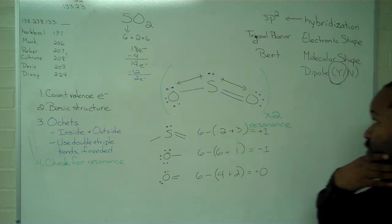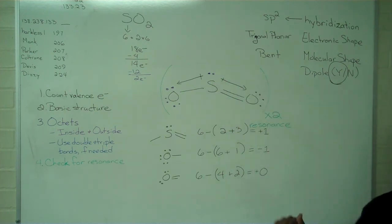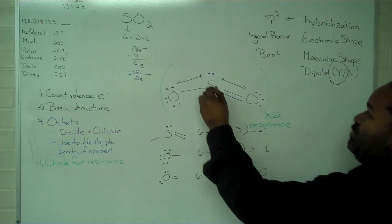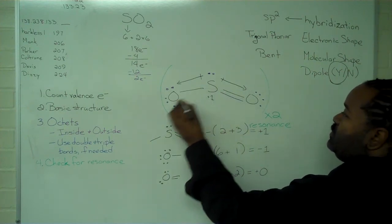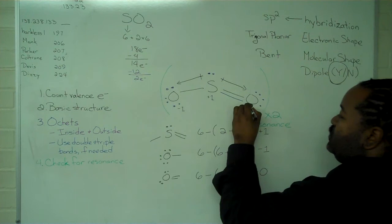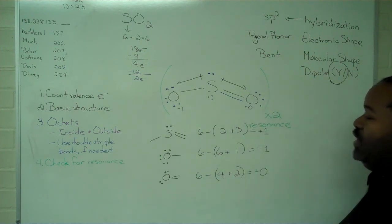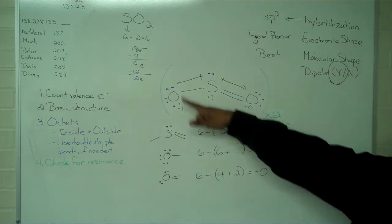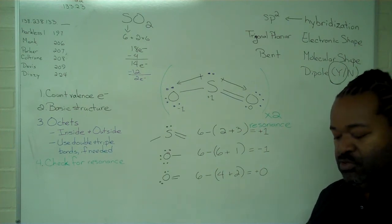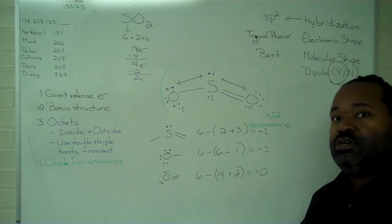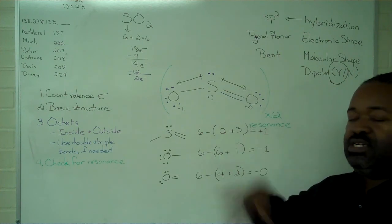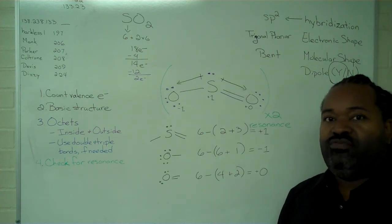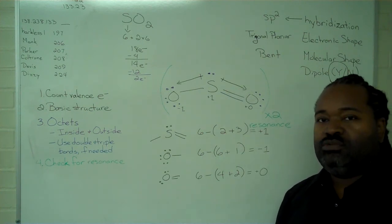Now, the reason this step is important in verifying whether or not we did this part right is that by assigning these formal charges, we can then observe that the total of the formal charges on everything in the molecule equals the overall charge, both of which are 0. So this is a very good indication that we have a valid and reasonable Lewis structure.